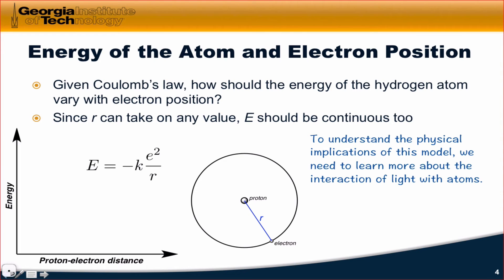Let's take a look at this graph of energy versus the proton-electron distance and let's lay down a zero of energy about halfway up the graph. This dotted line we'll label as E equals zero. As the proton-electron distance r varies, how would we expect the energy to vary according to Coulomb's law?